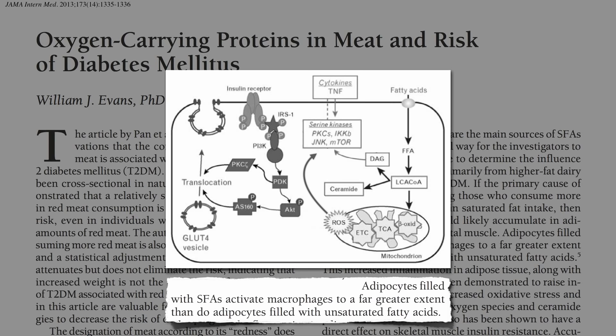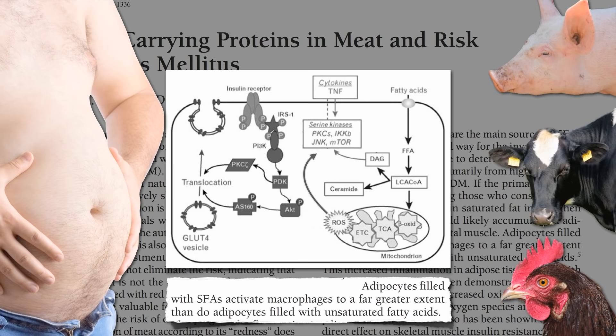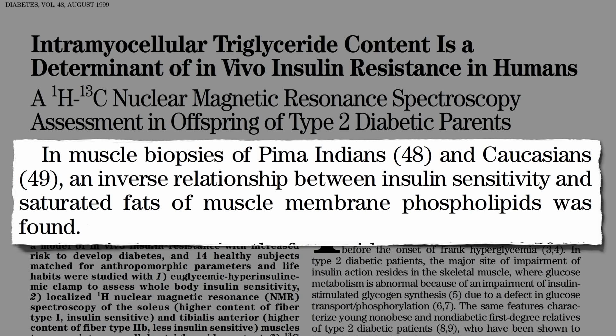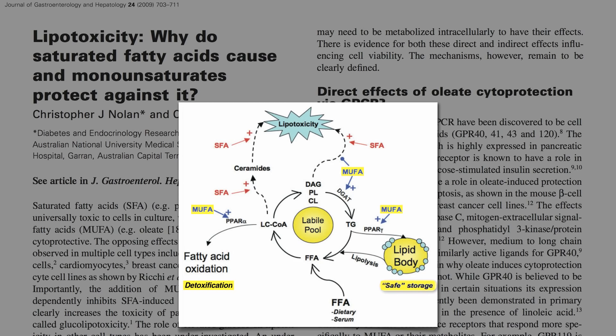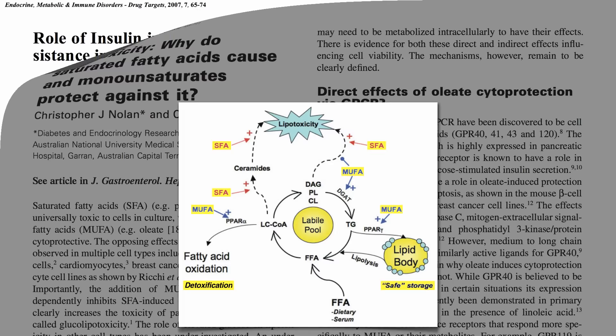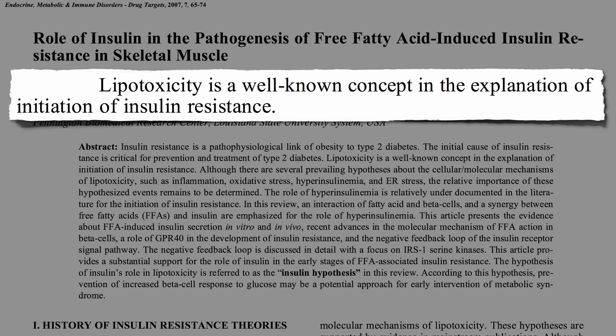And it doesn't matter if the fat in our blood comes from our own fat or from dietary fat. You can take muscle biopsies from people and correlate the saturated fat buildup in their muscles with insulin resistance. While monounsaturated fats are more likely to be detoxified or safely stored away, saturated fats create toxic breakdown products like ceramide that cause lipotoxicity — lipo meaning fat, as in liposuction — and this fat toxicity in our muscles is a well-known explanation for the trigger of insulin resistance.